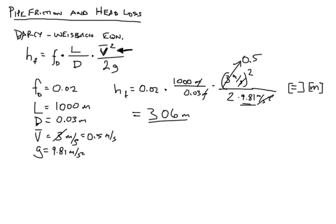And we would run that calculation again. Let's see here: 0.02 times 1000 times 0.5 squared instead of 3 squared divided by 2 and 9.81. Hold on, I forgot to divide by 0.03, I mean. There we go, that's a better number. We get about 8.5 meters for the second version of this calculation.